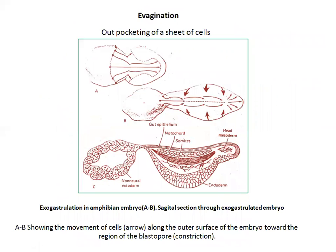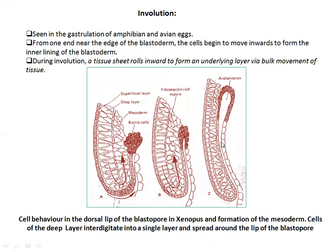Evagination is a portion involving outpocketing. In the case of amphibians, we have exogastrulation. Exogastrulation belongs to evaginations.